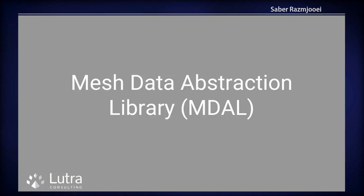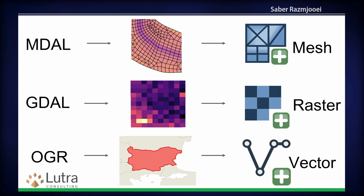For that reason, we created a library called MDAL. What it does: MDAL reads the mesh and visualizes it in QGIS, similar to PDAL which reads point clouds, or GDAL which reads vector and raster data. We're focusing on QGIS because we ship QGIS with this library, but it's an open source library, so you can use it with any other viewer.